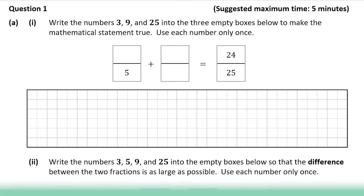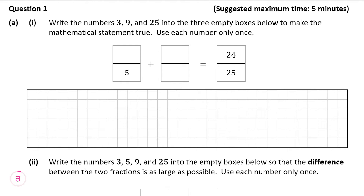So question 1A, part 1 asks us to write the numbers 3, 9 and 25 into the three empty spaces in the boxes below to make the statement true. You can only use each number once. So it's something over 5 plus something over something else, equal to 24 over 25. Our numbers are 3, 9 and 25.